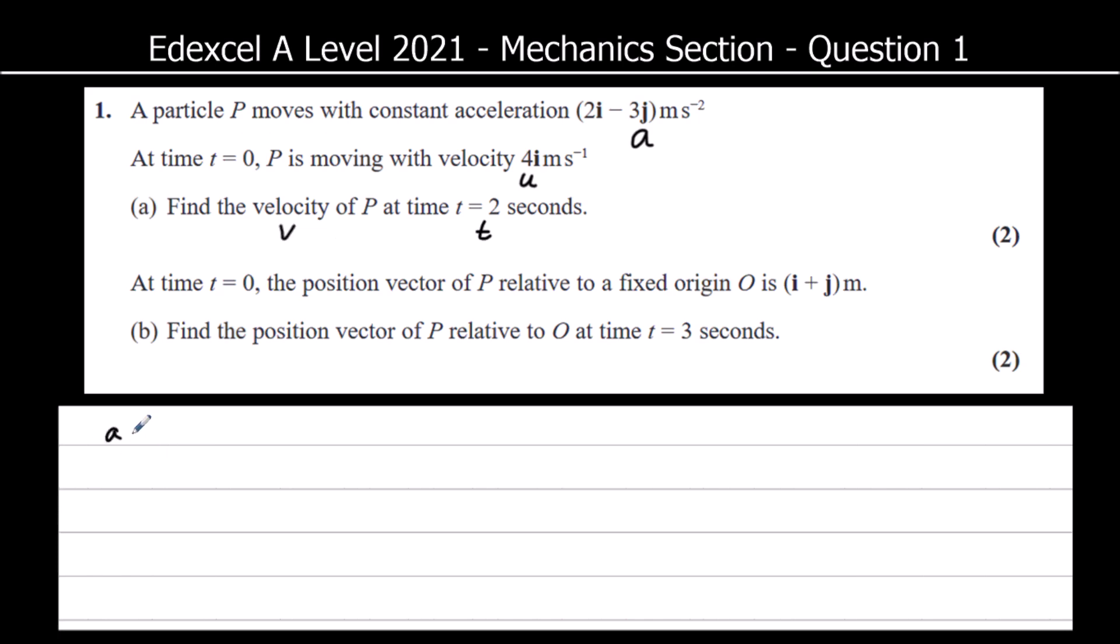So we have S we don't have. U is 4i. V is what we're working out. A is 2i minus 3j. And t equals 2.